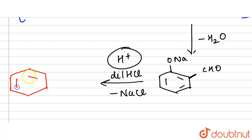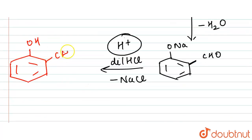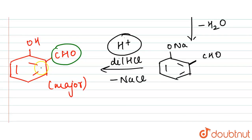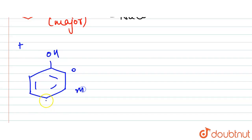This gives the formation of two products. Taking OH at this position, the major product is the CHO group at the ortho position with respect to OH — that is the second position. The minor product also formed is the para product, where CHO is at the para position with respect to OH.